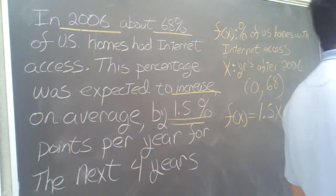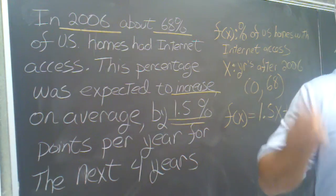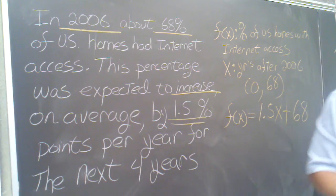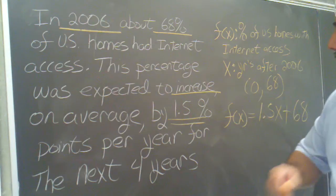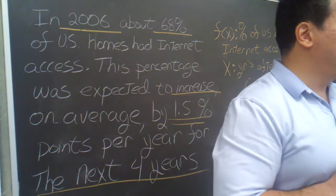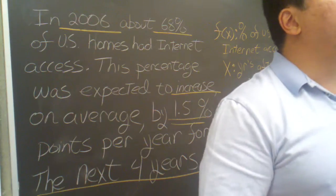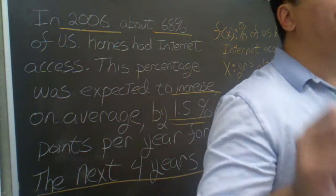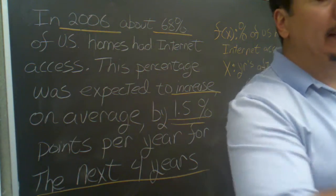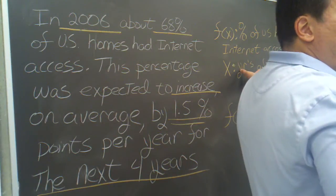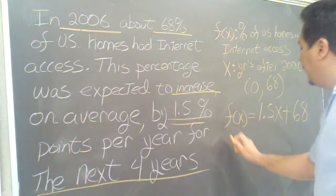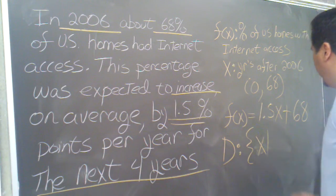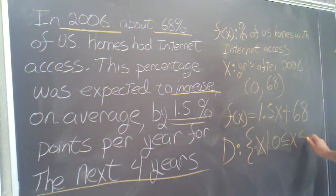Last piece of information: domain. What are all of the possible inputs? My inputs are the years — specifically, how many years after 2006 are we allowed to use? The problem says the next four years, so I can go from 2006 through 2010. Adjusted to years after 2006, we're starting at 0. So the domain is the set of x where x is between 0 and 4.